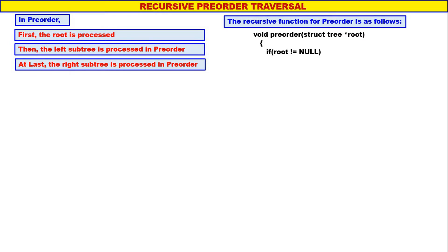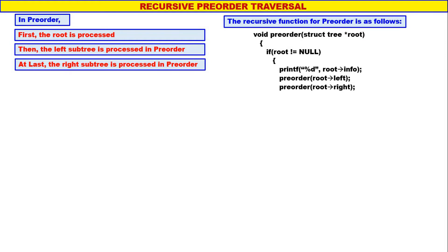If root is not equal to null, printf root of info — that is the root is processed. Then the left sub-tree is processed in pre-order using recursion. At last, the right sub-tree is processed in pre-order using recursion.